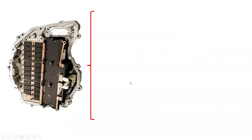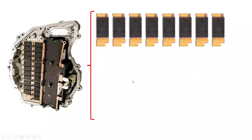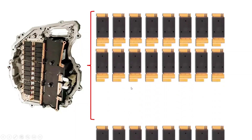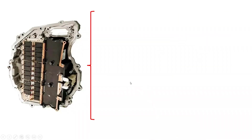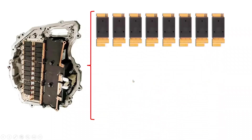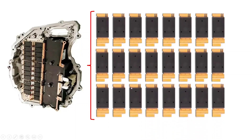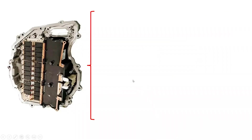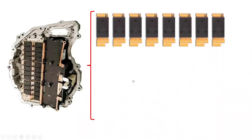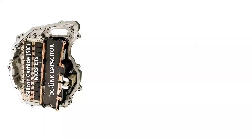The Tesla Model Y utilizes the same inverter topology as the Tesla Model 3, which consists of 24 silicon carbide MOSFETs from STMicroelectronics with a custom package designed for it. Each of the silicon carbide MOSFETs is rated at 650 volts and 100 amperes. The Tesla Model Y uses a three-phase two-level inverter topology with an input battery voltage of 400 volts.